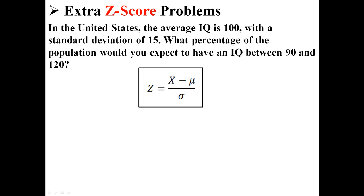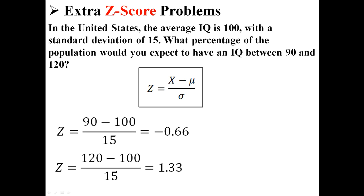So we have the z equation, and we're going to need to calculate z for both 90 and 120. So in the first one, it's just 90 minus 100 divided by 15. I get negative 0.66. And for the second one, it's 120 minus 100 divided by 15. I get 1.33.